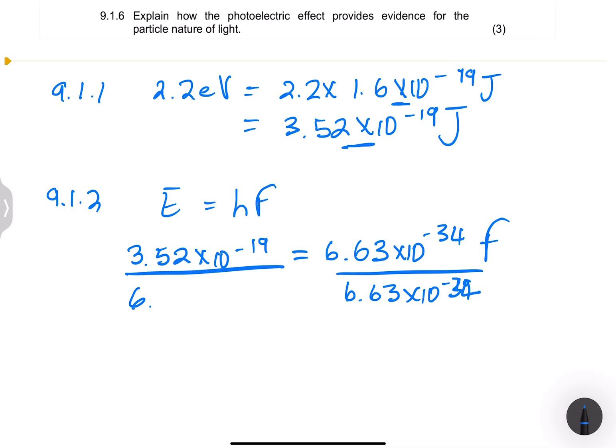That's 6.63 times 10 minus 34. What I'm going to do, because my calculator gives me a little bit of an issue - I've just dropped my calculator. So that's 3.52 exponent minus 19 divided by 6.63, that's minus 34. And I get a frequency of 5.31 times 10 to the power 14 or exponent 14, and remember that frequency is measured in hertz.